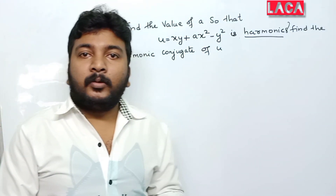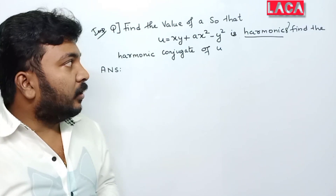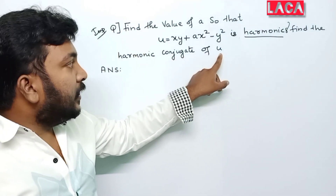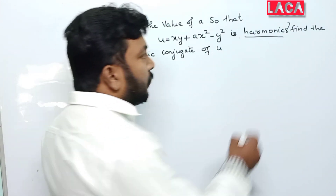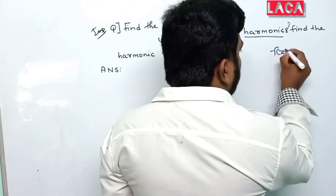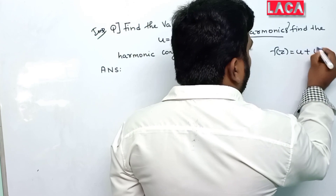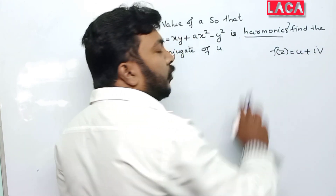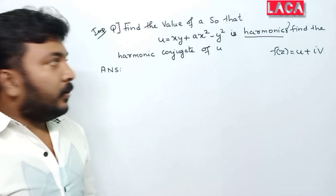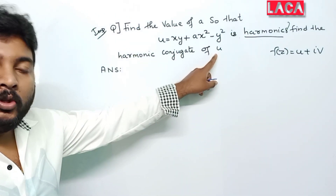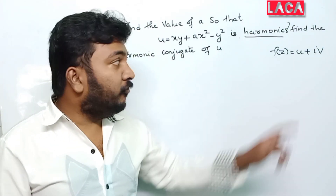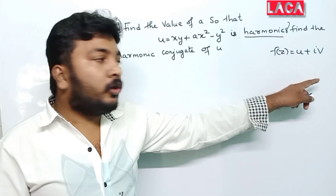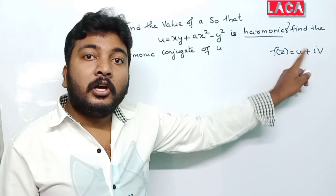We call harmonic conjugate, and we will try to give you final exam questions. Find the harmonic conjugate of u. If u and v combine as u + iv, then v is the harmonic conjugate of u. Similarly, u is the harmonic conjugate of v. Find the harmonic conjugate of v.